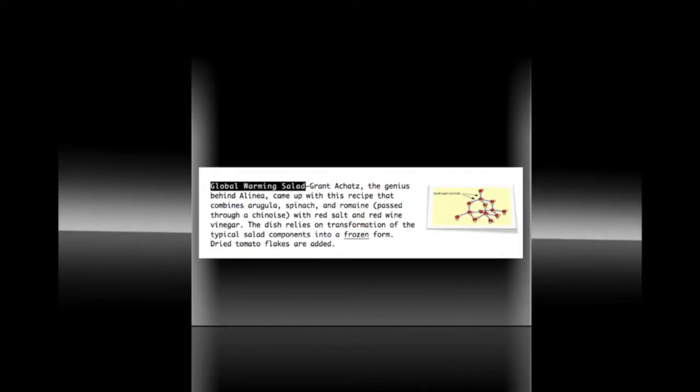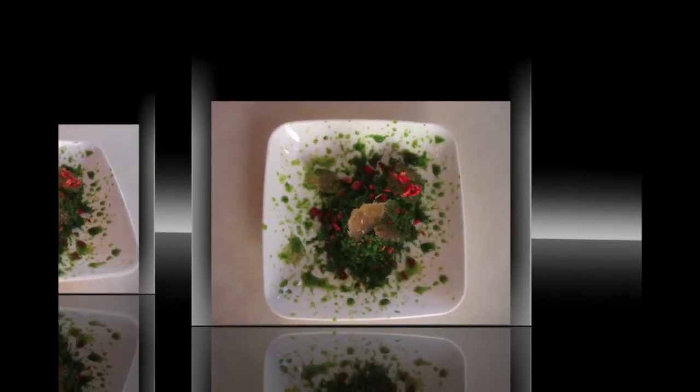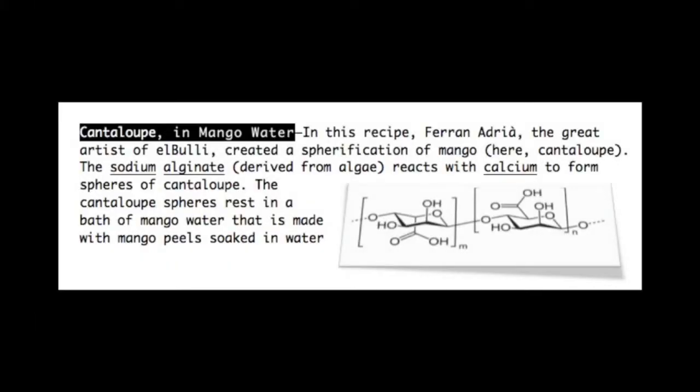This one actually came out great. It's from Grant Achatz's cookbook. It involves taking various forms of lettuce, processing and blending those, and then taking the lettuce as well as some salts and basically freezing this. You have a transformation, which is really key both in immersive spaces and in molecular cuisine. Each guest was amazed to taste the lettuce but in a frozen form.